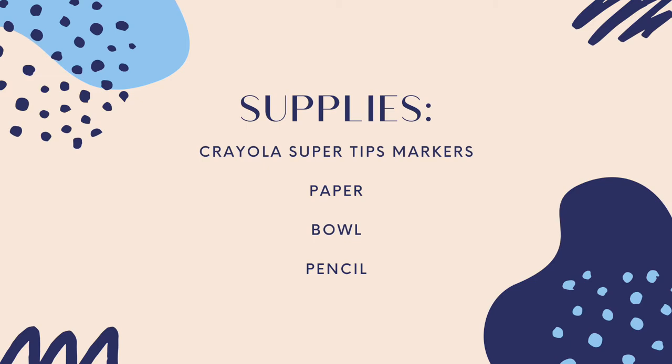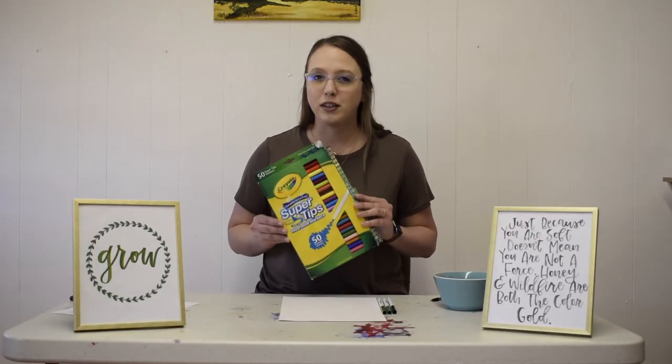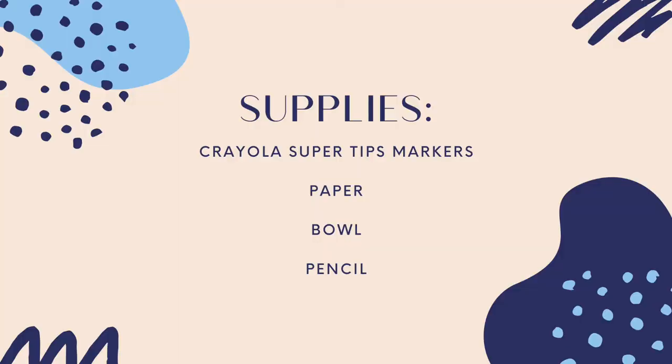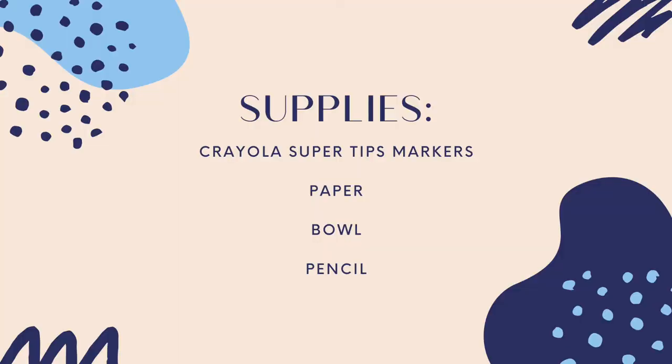Today, I'm going to be using these Crayola Super Tips markers. They're one of my favorite lettering tools. You'll also need some paper for practicing and your final project. You'll need a bowl or something round to trace, and you'll need a pencil for some light sketching. If you're drawing this at home, you can use any marker, crayon, or pencil that you have flying around. If you're feeling adventurous, you can even try paints.